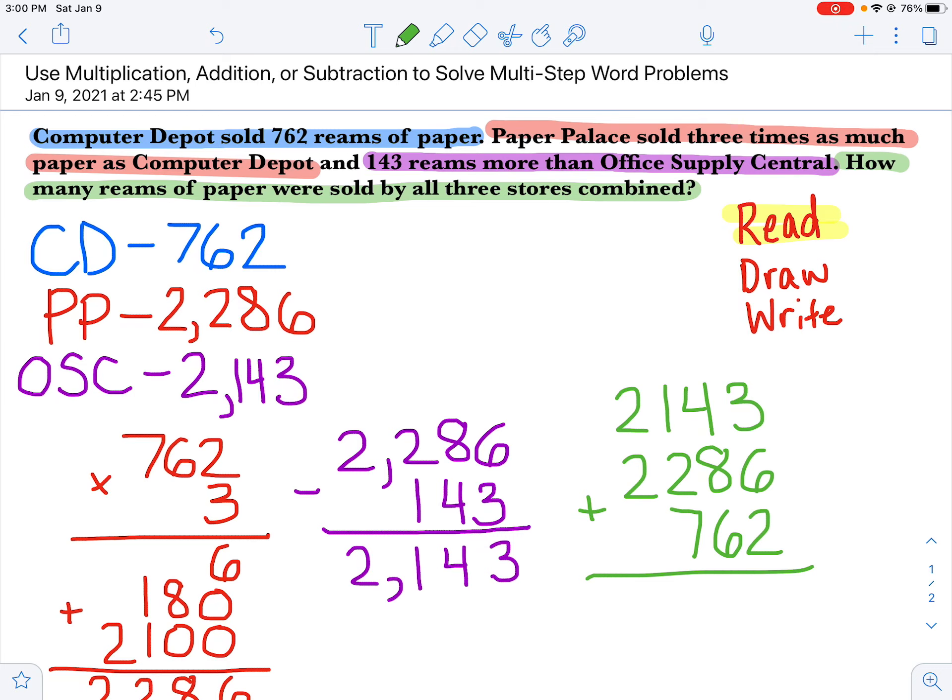So I'm going to add all my ones. 3 plus 6 plus 2 is 11. Let's see, 4 plus 8 plus 6 plus 1. 6 and 4 is 10, 8 and 1 is 9, so that makes 19. 1 plus 1 plus 2 plus 7. Well, 2, 7 and 1 make a 10, plus 1 is 11. And 2 plus 2 is 4, plus 1 is 5. So I've added up all of the stores, and I have how many reams of paper were sold? 5,191.